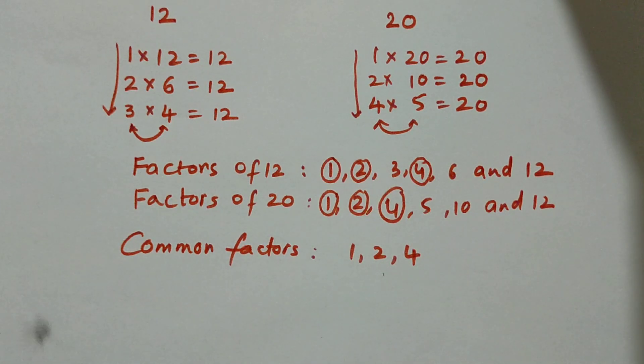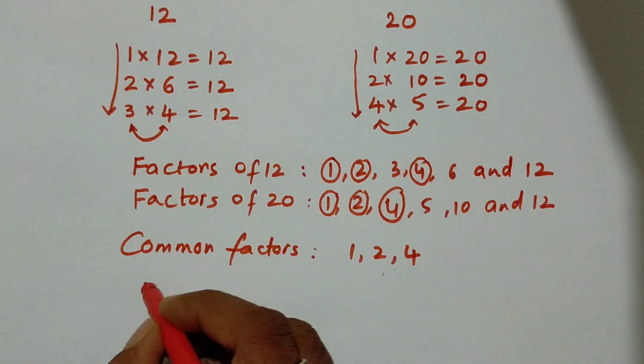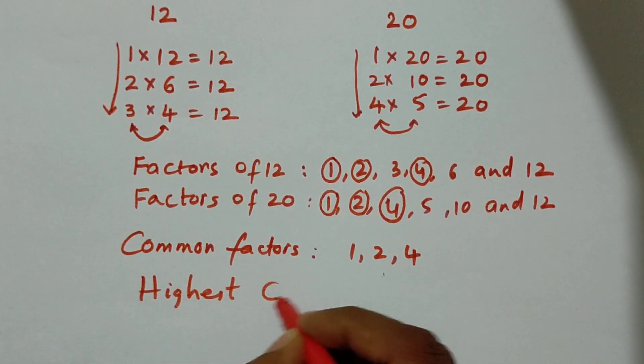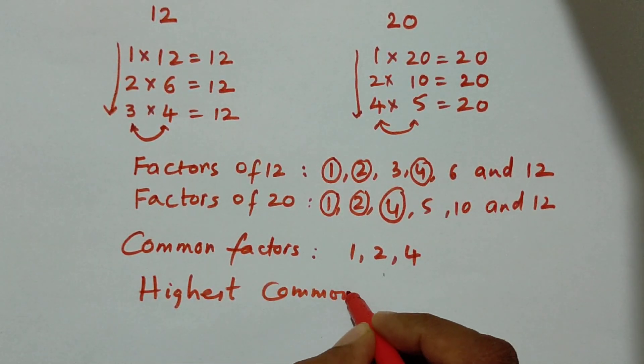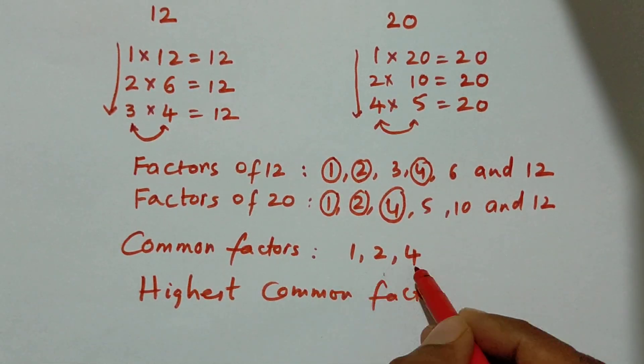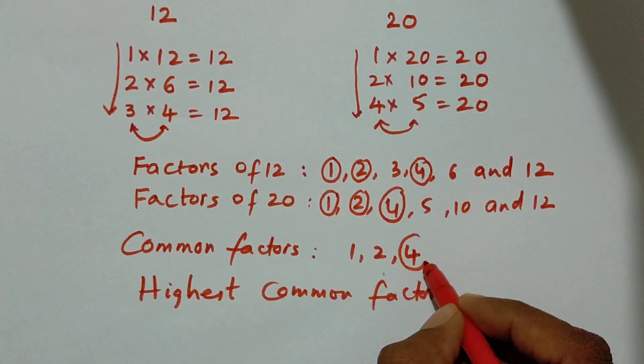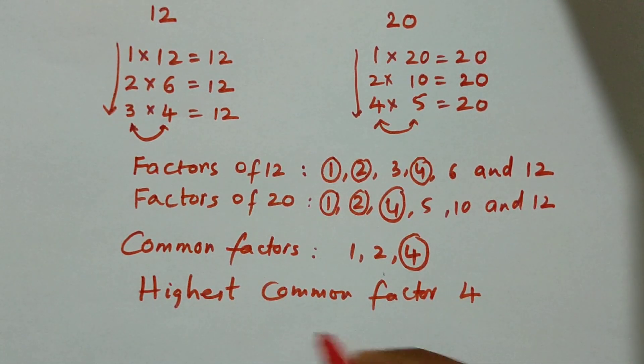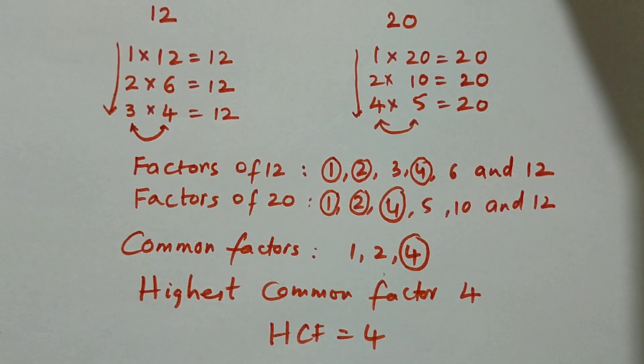Now in this problem, we are going to find out the highest common factor. In this list of 3, what is the highest? This is the highest factor. So that will be the highest common factor, which is 4. Thank you.